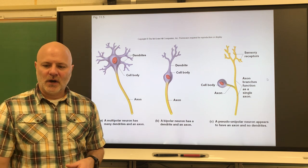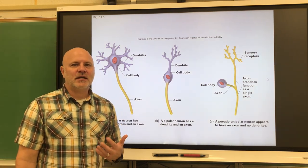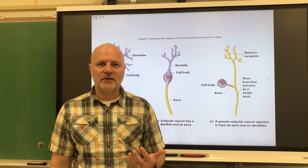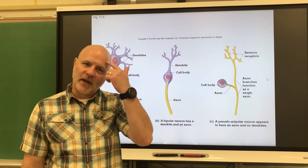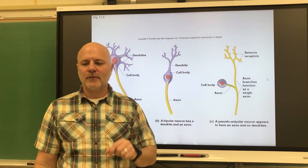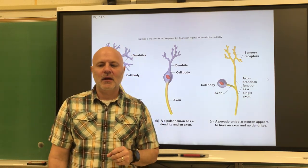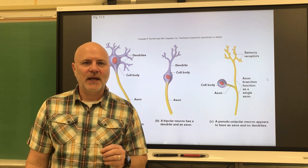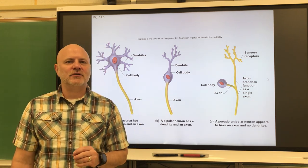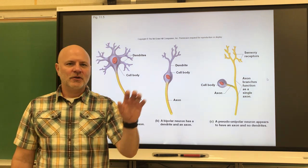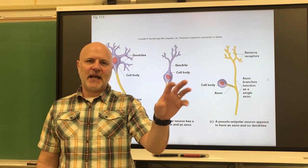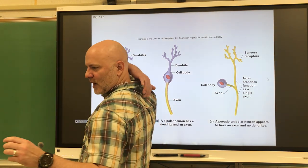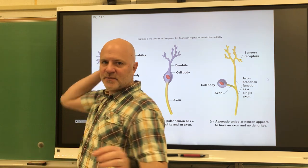Next are motor neurons — nerve cells that conduct impulses from the central nervous system out to effectors, such as causing my hand to move. These are mostly multipolar, and their cell bodies are within the central nervous system. The neurons causing my hand to move have their cell bodies way back in my spinal cord.